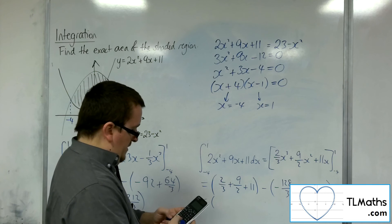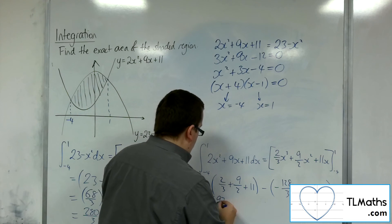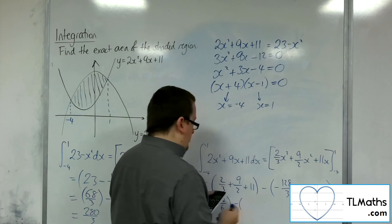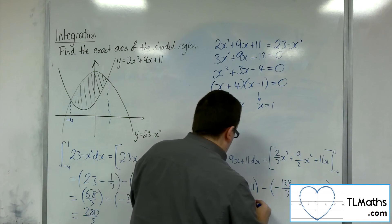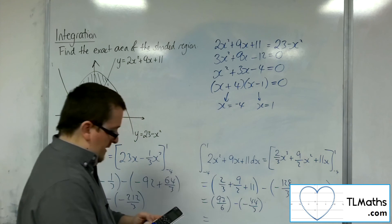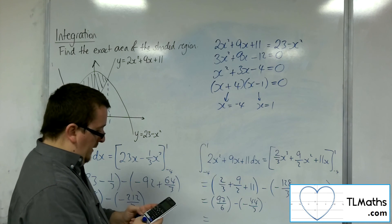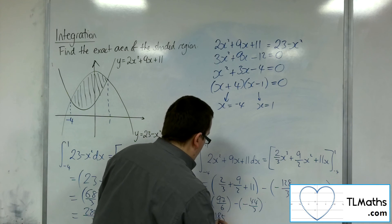So 2 thirds plus 9 halves plus 11, so 97 sixths in the first bracket. Then minus 128 over 3 plus 72, take away 44, is minus 44 over 3. So 97 over 6 plus 44 over 3, makes 185 over 6.